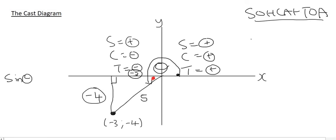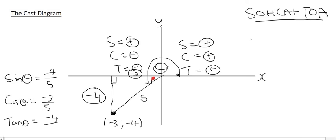Sin theta — notice I'm using theta, which is technically that big outside angle, but just work inside the little triangle starting at the red dot. Sin is the opposite, so that's minus 4, over the hypotenuse of 5. Cos of theta is minus 3 over 5. Tan is opposite over adjacent: minus 4 over minus 3 — notice these negatives cancel. So sin is negative, cos is negative, but tan is positive.